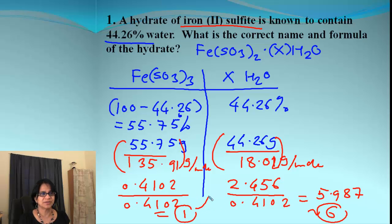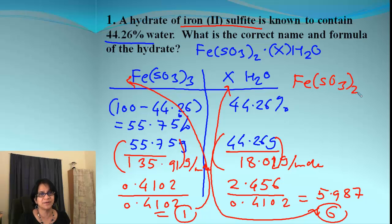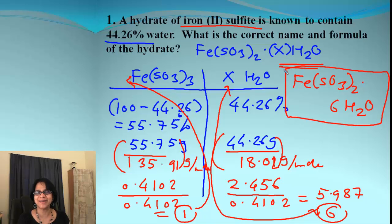So there you go. Your 1 goes for iron sulfite. And that 6 is going to go for water. So we can write down the correct formula for the hydrate. Fe(SO3)2 and this XH2O is actually 6H2O. So we have 6 molecules of water.